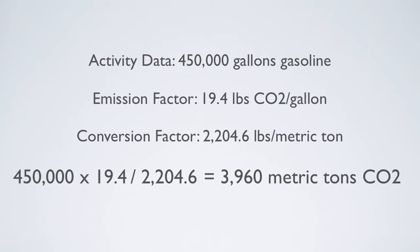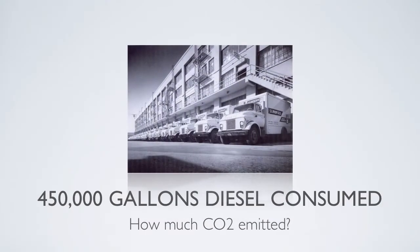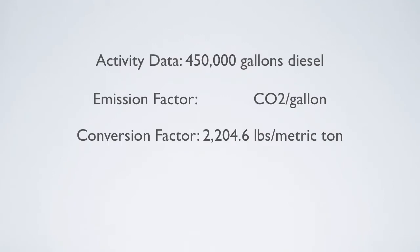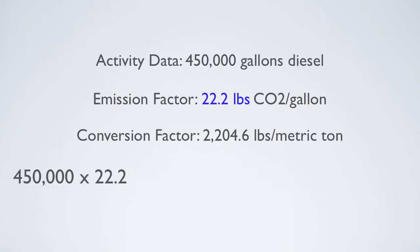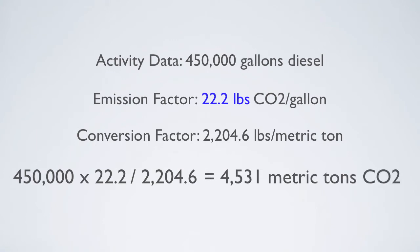What changes are necessary if you are told this is an all-diesel fleet? The only difference would be a change in the requisite emission factor. The activity data remains 450,000 gallons of fuel — diesel this time — but the emission factor is now 22.2 pounds CO2 per gallon of diesel. You simply multiply 450,000 times 22.2 and divide by 2,204.6 to arrive at 4,531 metric tons of CO2 emitted this year.